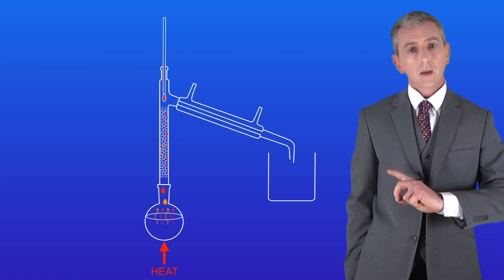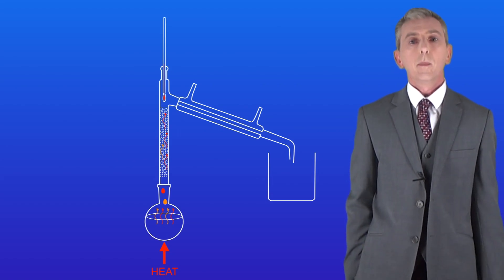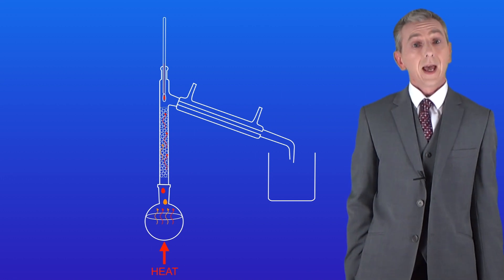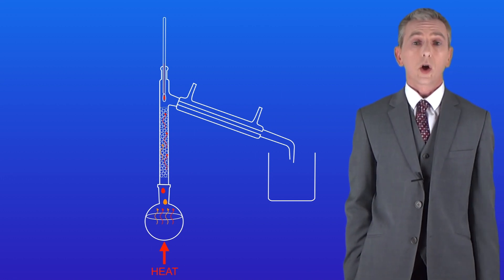So here the red arrows show the lower boiling point chemical making its way up the fractionating column ahead of the higher boiling point chemical which I'm showing in orange.